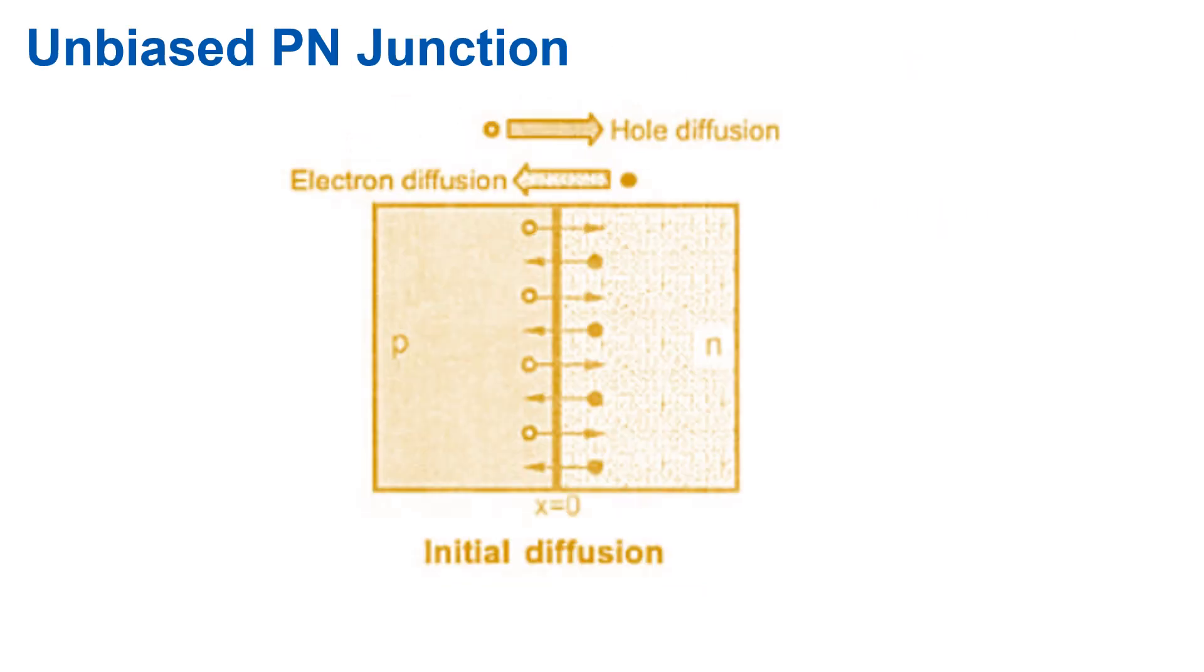Let us consider first the features of unbiased P-N junction. If the doping levels are not uniform, then at one place, large number of charge carriers exist, and at another place small number of charge carriers exist.